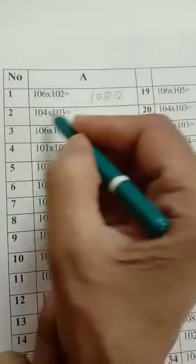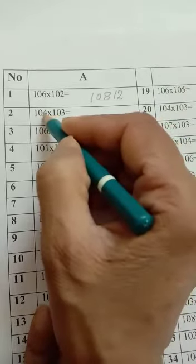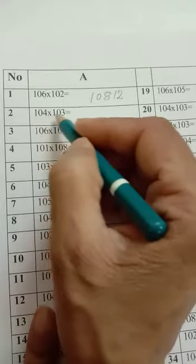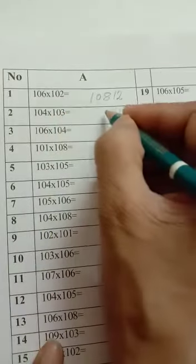Question number 2 is 104 multiply by 103. First take, you multiply, then you add. First take, you multiply 4 3s are 12. Then 4 plus 3 is 7. Then 10. Answer is 10712.